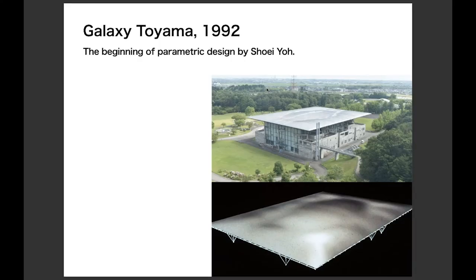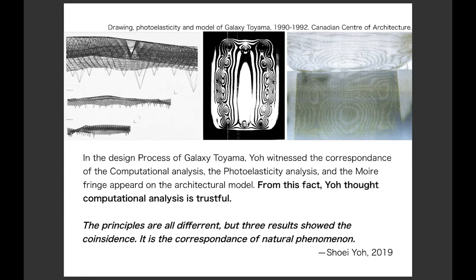In the Oguni project, Yo decided the form, and then the engineer analyzed the structure — form was not decided by computer. But in the Galaxy Toyama project, Yo started to do parametric design. The four sides of the building exterior are flat — Yo's decision — and according to the position of the columns as parameters, the roof structure deformed three-dimensionally. In the design process of Galaxy Toyama, Yo witnessed the correspondence between the computational analysis, the photoelasticity analysis, and the moiré fringe on the architectural model. From this correspondence, Yo became convinced that computational analysis was trustworthy — this was the moment the architect became confident about digital design.